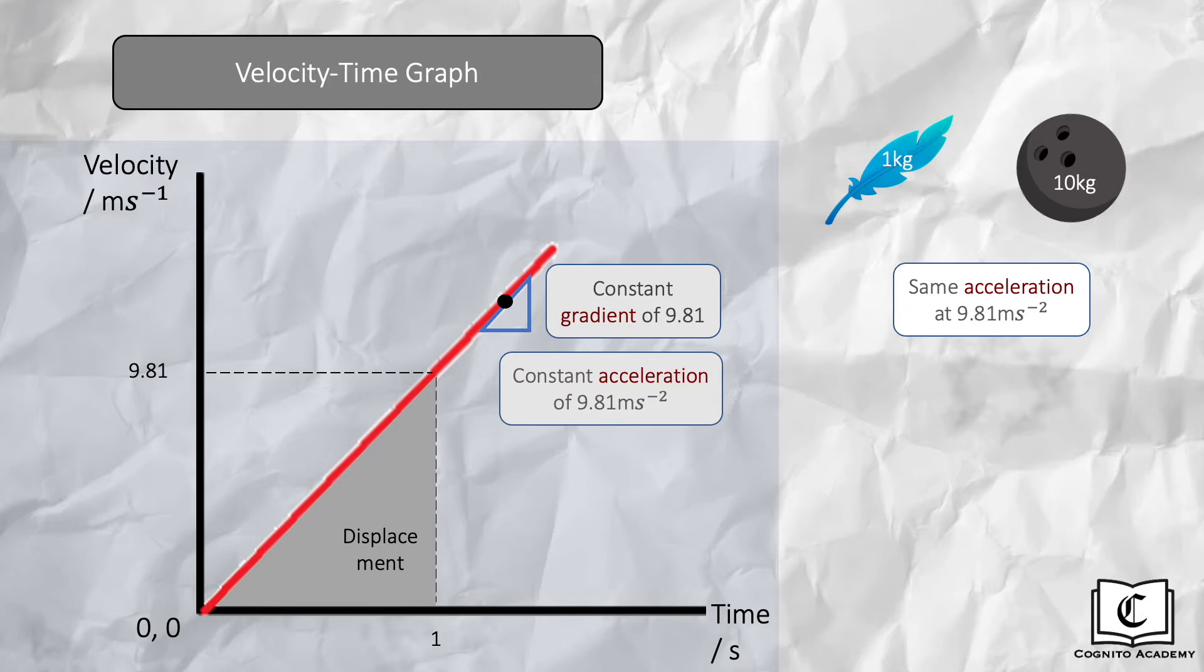Since both objects share the same graph, we can see that at the 1 second mark, area under the graph for both objects are similar. And we can see that this is true at any point of time in the entire duration. The displacement of both objects are the same, which was what we saw in the clip.